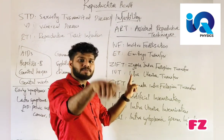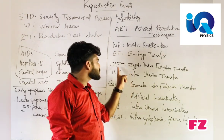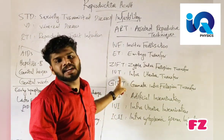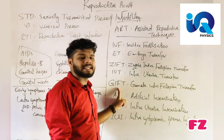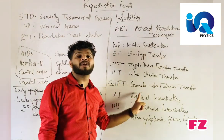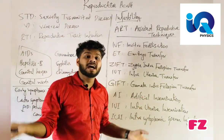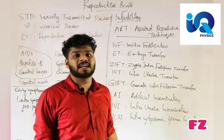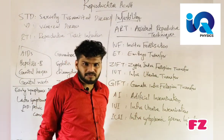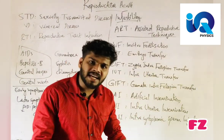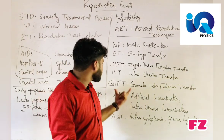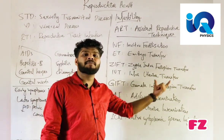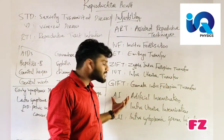GIFT — Gamete Intra Fallopian Transfer — involves collecting the egg and sperm and transferring them into the fallopian tube, where fertilization occurs artificially inside the body.